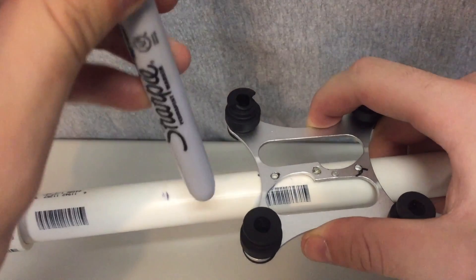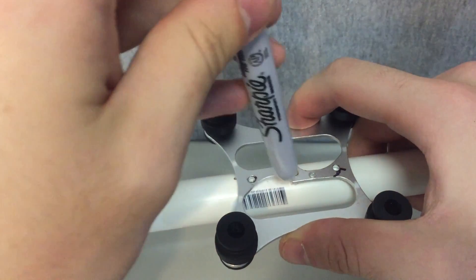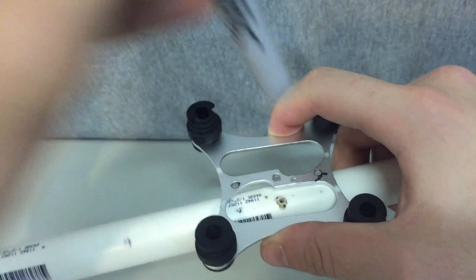This is going to make the fit and finish of mounting that top of the gimbal tray so much easier. Just get a sharpie, mark out three holes, and you're going to drill those holes.